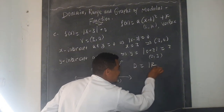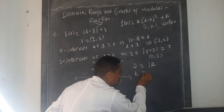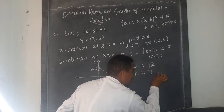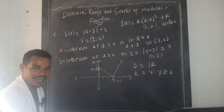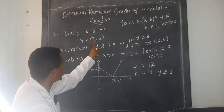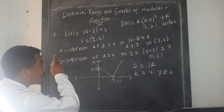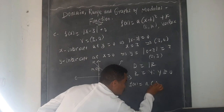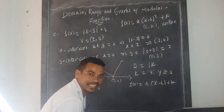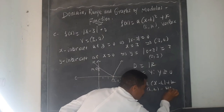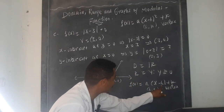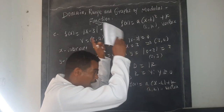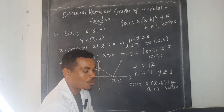The domain is any real number and the range is y greater than or equal to zero. For f(x) = a|x - h| + k, the vertex is (h, k) and the axis of symmetry is x = h. Here the axis of symmetry is x = 3. A positive coefficient means the graph opens upward; a negative coefficient means the graph opens downward.